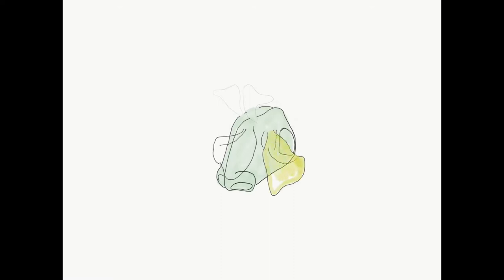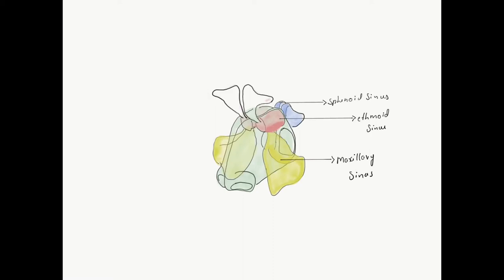Pneumatization of the sinuses follows a typical pattern. The maxillary sinus is present at birth and makes its radiological appearance at around 3 to 4 months, attaining adult size by 15 years. Ethmoid sinuses are also present at birth but can be appreciated radiologically at 1 year of age, also reaching adult size by 15 years. Sphenoid sinuses are not present at birth but undergo pneumatization, and by 4 years of age one can radiologically appreciate the sphenoid sinus, with adult size obtained at around 20 years. Frontal sinuses are the last to get pneumatized, appreciable radiologically by 6 years of age.